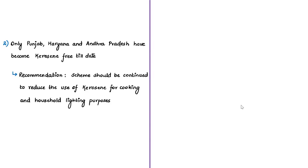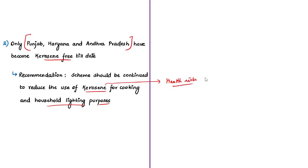The standing committee report says that till date only three states have become kerosene-free — Punjab, Haryana, and Andhra Pradesh. Large segments of population across various states are still dependent on kerosene for cooking and lighting purposes, and we know that the use of kerosene poses more health risks. The committee stressed on the need for continuing the Pradhan Mantri Ujwala Yojana and universalizing LPG connections. The central and state governments can work together to reduce the subsidy given to kerosene and promote LPG connections.